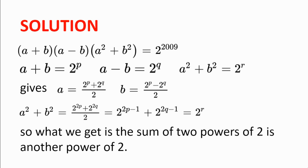So we can write: a plus b equal to 2 to the power of p, a minus b equal to 2 to the power of q, and a squared plus b squared equal to 2 to the power of r. Solving for a and b, we get a equal to 2 to the power of p plus 2 to the power of q, all divided by 2, and b equal to 2 to the power of p minus 2 to the power of q, all divided by 2. Substituting into a squared plus b squared gives 2 to the power of 2p minus 1, plus 2 to the power of 2q minus 1, which equals 2 to the power of r.